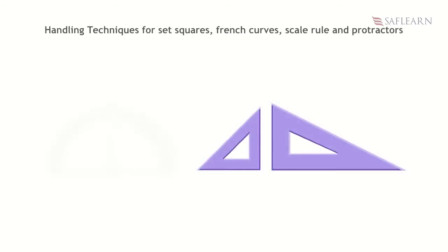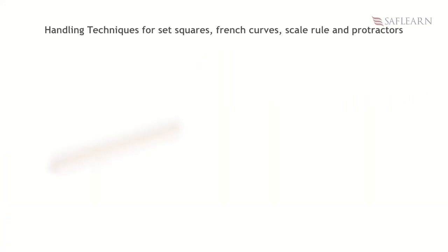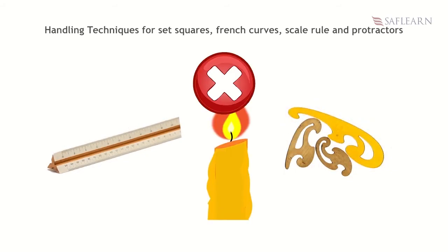For set squares, French curves, scale rule, and protractors, do not use any sharp objects such as razor blade or knife on their edges. Keep them away from fire and always keep them in a safe place.